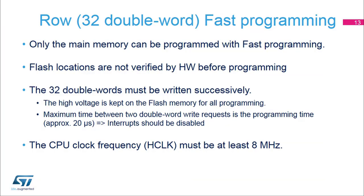A fast programming mode allows you to program 32 double words faster than in standard programming mode. Only the main memory can be programmed in fast programming mode. The flash address location contents are not verified by hardware before programming in fast mode. The 32 double words must be written successively, and the high voltage is kept on the flash memory for all programming. The maximum time between two double word write requests is the programming time, which is approximately 20 microseconds. Consequently, interrupts should be disabled to ensure that the 20 microseconds between the two word write requests is not exceeded. The minimum clock frequency must be at least 8 megahertz in fast programming mode.